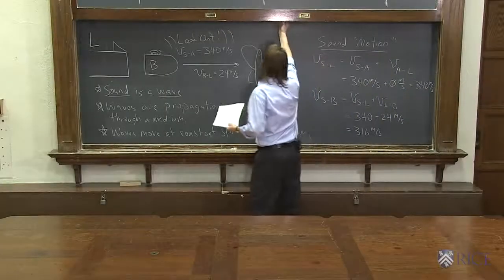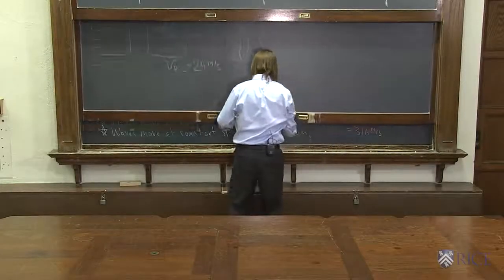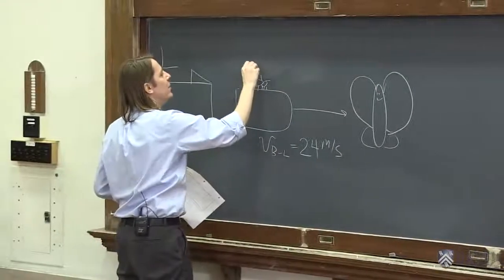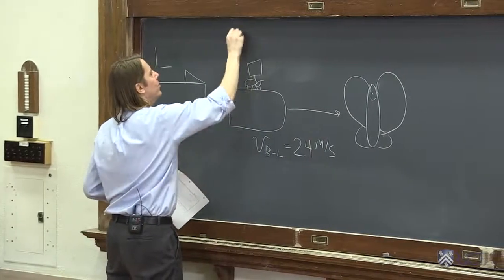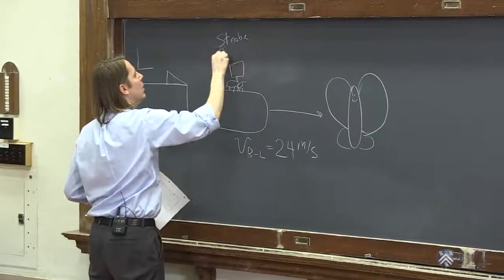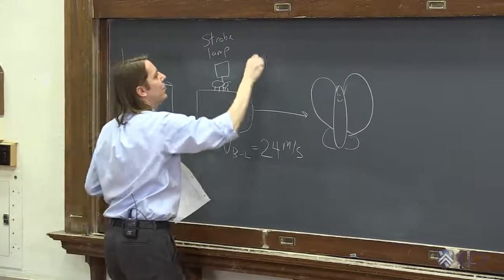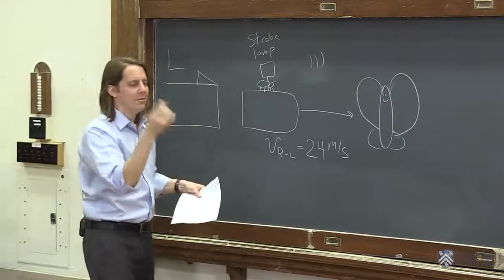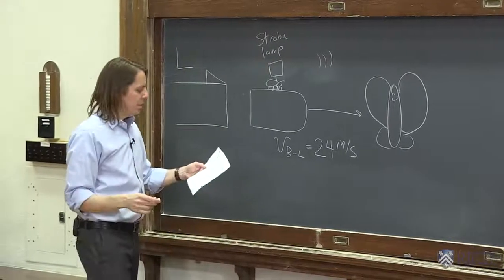What if the ant had a laryngitis? It still wants to protect the butterfly. So in this case, it holds up a strobe lamp. And the strobe lamp sends light towards the butterfly. That way the butterfly will see the light, fly away, won't get shot.